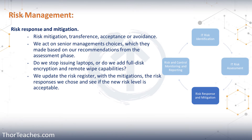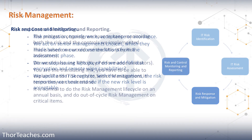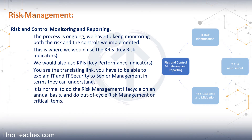We implement the countermeasures that senior leadership has chosen, which then brings us to the next phase: risk and control monitoring and reporting. This, again, is due diligence. It is both the risk and the control that we implemented that we are monitoring and reporting on. This is an ongoing process — we keep monitoring the risk and the controls we have put in place to make sure they are enough.